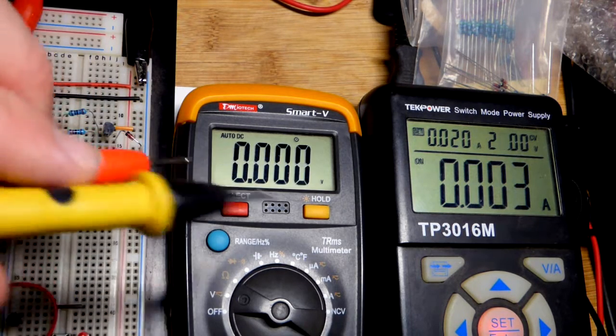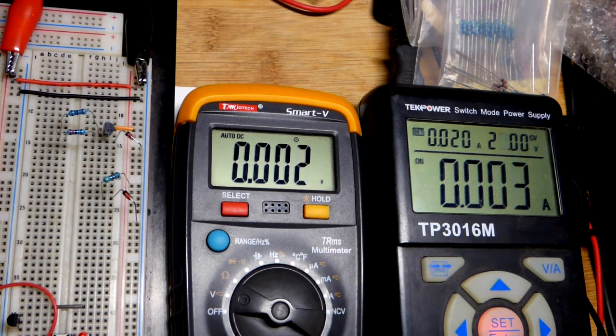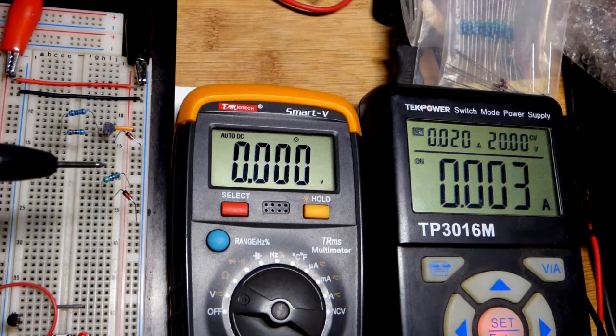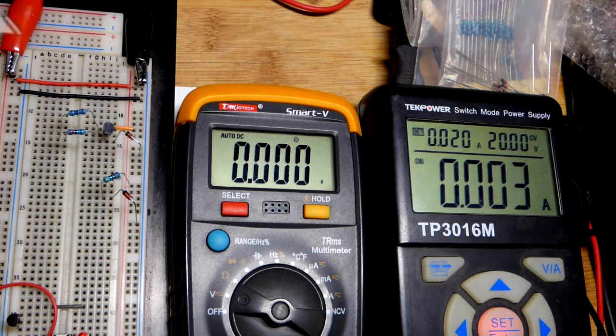There you can see we needed quite a bit more voltage to get the current with that setup there. So that's a 4,700 ohm resistor.